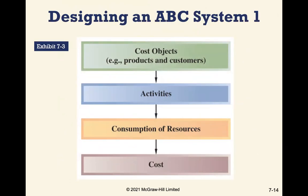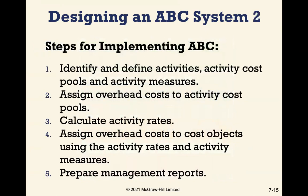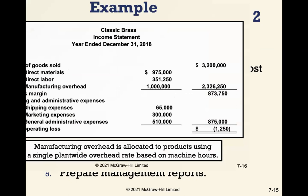When designing an activity-based costing system, we need to know our cost objects such as products and customers, what activities are directly part of those products or servicing those customers, what resources we consume in the process, and the cost of those activities and resources. The steps are: identify and define activities, activity cost pools, and activity measures; assign overhead costs to activity cost pools; calculate activity rates; assign overhead costs to cost objects using activity rates; and prepare management reports.